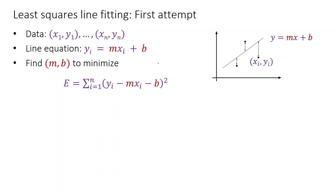Let's start with least squares line fitting. In this case you can see there is a set of points. What we want to do is describe this set of points — we want to fit the line y = mx + b. If this is the line that we have computed, there is an error that we are making, and we can minimize those errors so that we find the parameters of this line, specifically m and b.